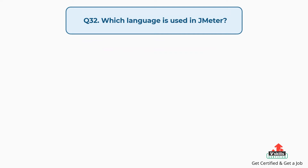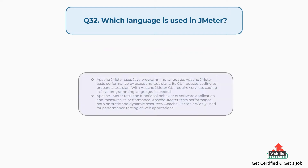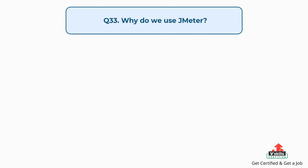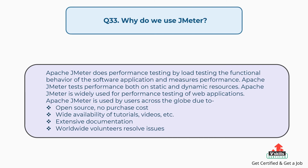Question 32: Which language is used in JMeter? Apache JMeter uses Java programming language. Its GUI reduces the coding needed to prepare a test plan. JMeter tests the functional behavior of a software application and measures its performance on both static and dynamic resources, and is widely used for performance testing of web applications.